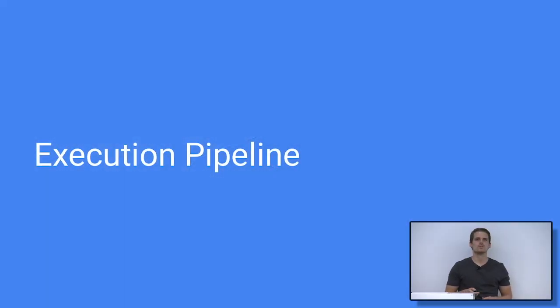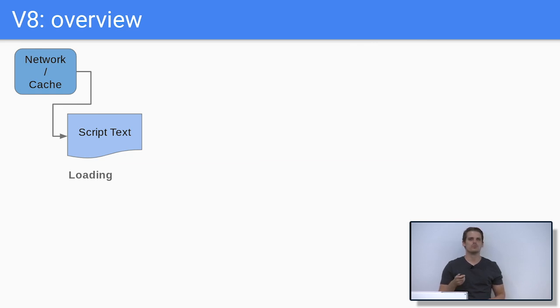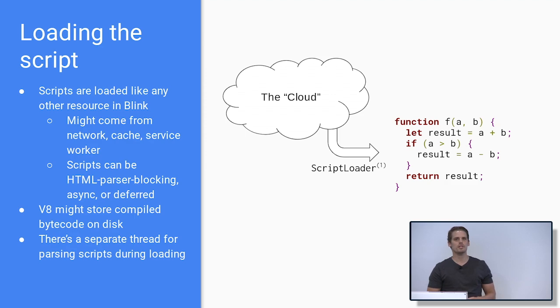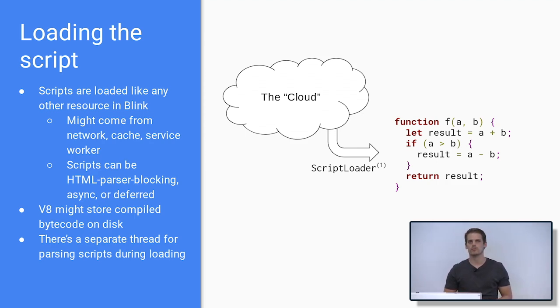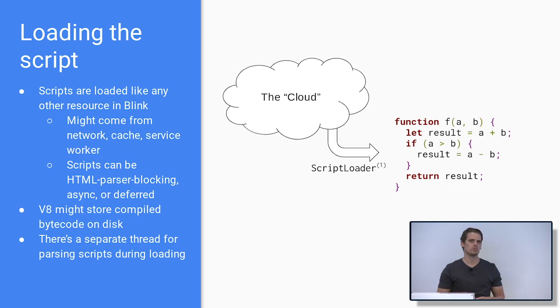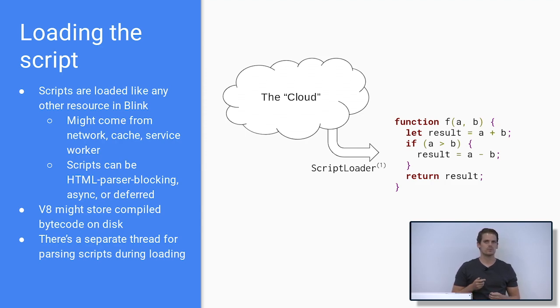Let's look at how JavaScript code gets executed in V8. In the first step of the execution pipeline, we need to load some source code. V8 doesn't know how to download a file — that's the embedder's job. In Blink, the script is loaded like any other resource from the network, cache, or a service worker. V8 may also cache the bytecode for a script, so on a warm load we can skip parsing and directly load the bytecode. Another feature V8 supports is streaming parsing, which allows us to parse a file while it's being downloaded, hiding the cost of parsing in the network layer.